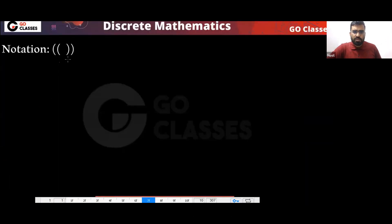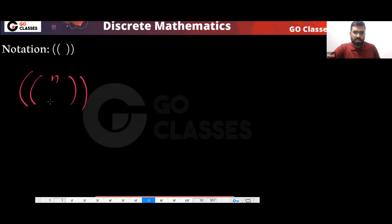Now let me explain this notation. Some authors use it — it is not a standard notation, so you don't have to worry about it in the GATE exam. They will not give you this notation, but some authors use it. Basically, this notation means N+K−1 C K.